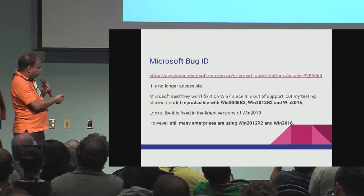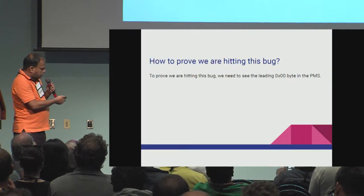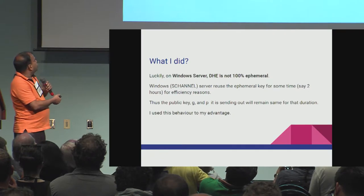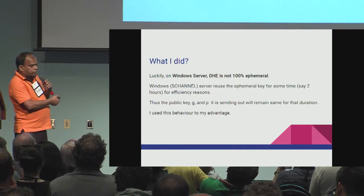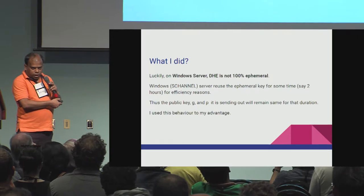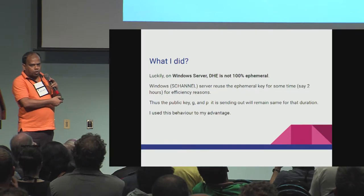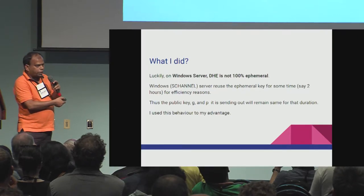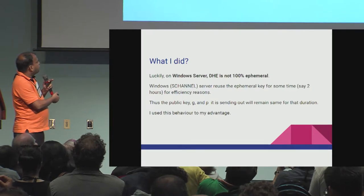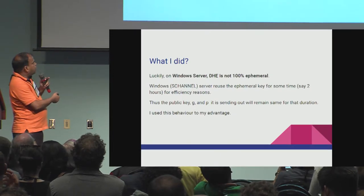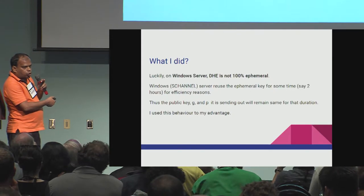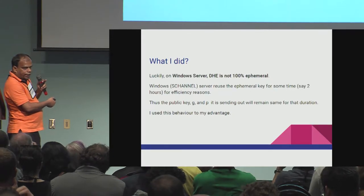I was not the one who originally found this bug — it has been there for a couple of years. I did a quick search on Google and found that some people had already reported it, but there is no public documentation on it. To prove this bug, I realized that on Windows, Diffie-Hellman ephemeral is not 100% ephemeral — for up to two hours it uses the same parameters again and again.